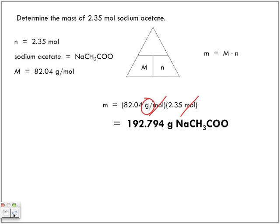192.794 grams. But what are the least number of significant digits in my question? Three. So I want the 192. But I don't just take 192. I look at the number I have next to it. It's only the one number that is following what we're keeping. So what does the answer become? 193 grams of sodium acetate.